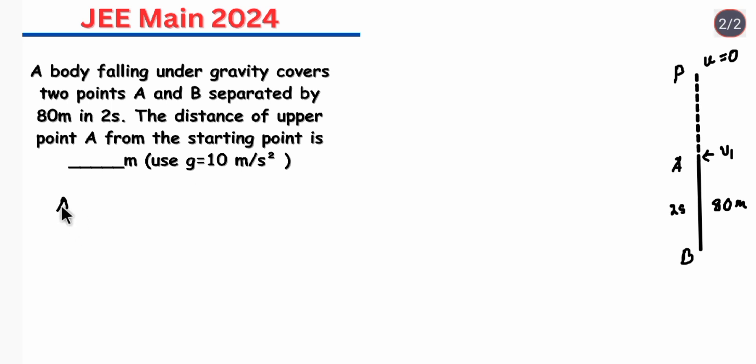So now in going from A to B from the relation S equals to UT plus half A T square. Our distance is 80 meter and initial velocity V1 at A and time taken is 2 seconds plus half acceleration is 10 into T square that means 2 square which is 4.